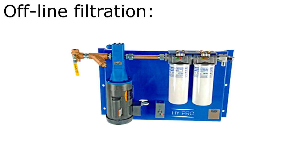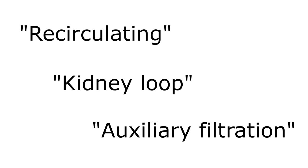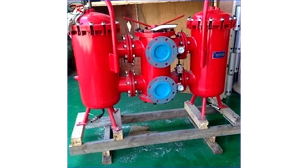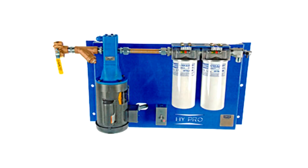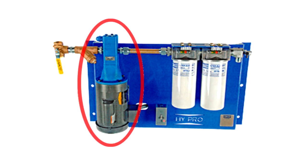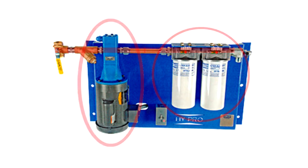Offline filtration is an increasingly popular filtration arrangement, also referred to as recirculating, kidney loop, or auxiliary filtration. It operates independent of a machine's main hydraulic system, making it attractive as a retrofit project for problem systems. An offline filtration circuit includes its own pump and electric motor, a filter, and the appropriate connecting hardware.